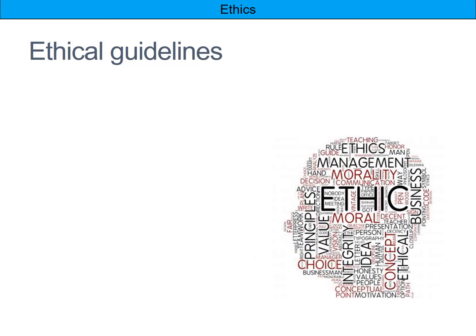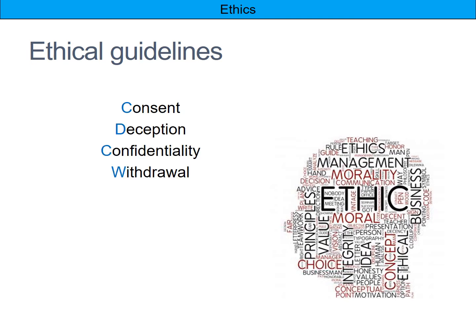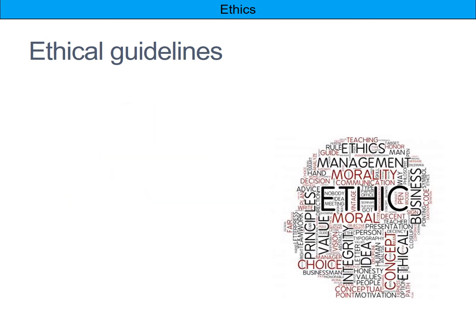The ethical guidelines are: consent, deception, confidentiality, withdrawal, and protection of participants. A good way to remember these is 'cats drink cold water and pop' — giving you the five initials C, D, C, W, and P.